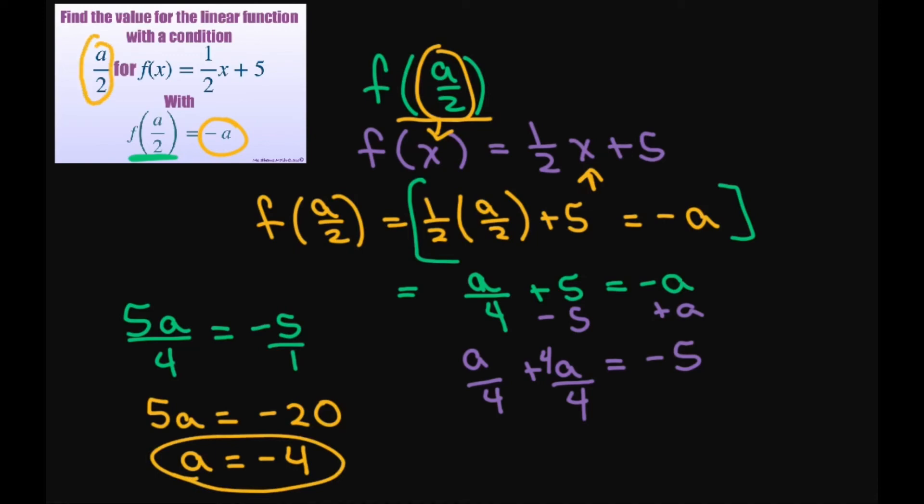So you take your a and then for a divided by 2 that's going to equal negative 4 divided by 2 which equals negative 2. So your answer is negative 2.